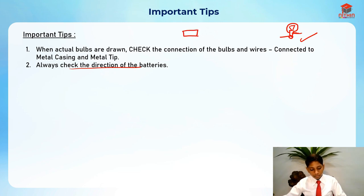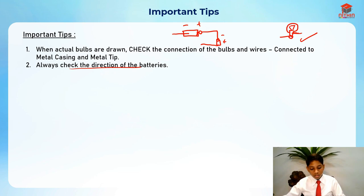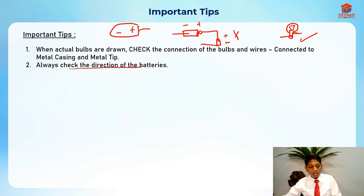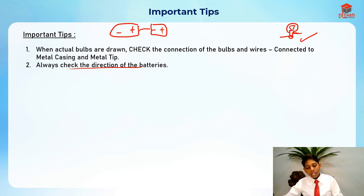Second tip: always check the direction of batteries when they are drawn. If a battery is in the wrong direction — for example, positive-negative when it should be negative-positive — it will create an open circuit. You need to align the batteries correctly: negative, positive, negative, positive. Watch out for these tricky questions and spot these small clues.